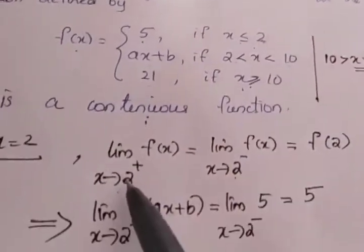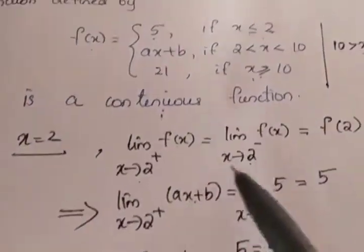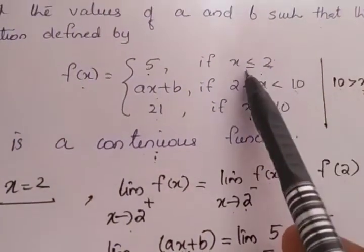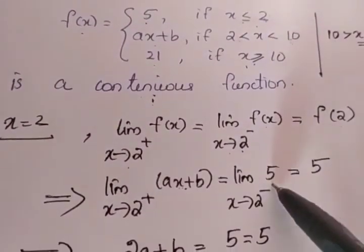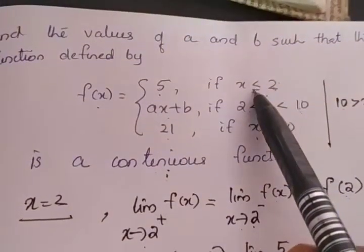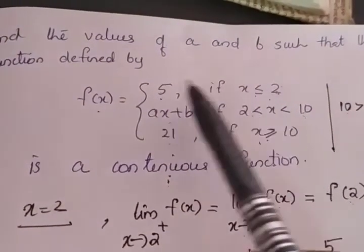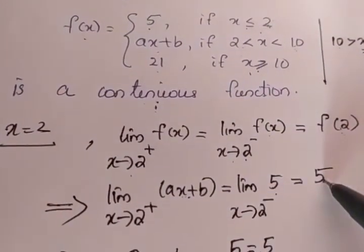So instead of f(x) here in the right hand limit, we have to write the value ax plus b. Limit x tends to 2 minus f(x) means x less than 2, where does it come? 5. So instead of this f(x) we can write the value 5. Again f(2), f(2) where we have to pick up x equal to 2. So here lies x equal to 2 and the corresponding function is 5. So instead of f(2) we can write the value 5.